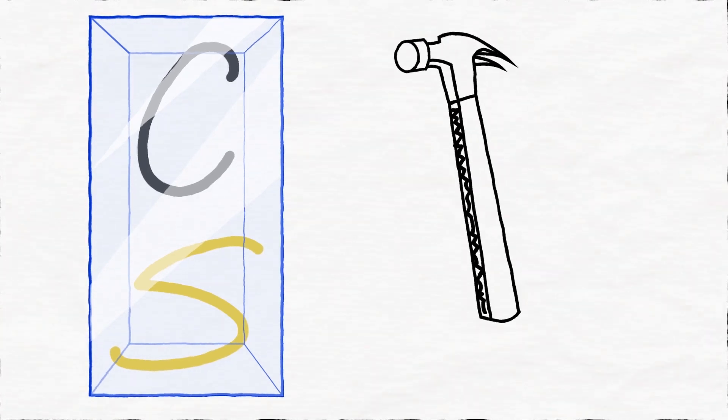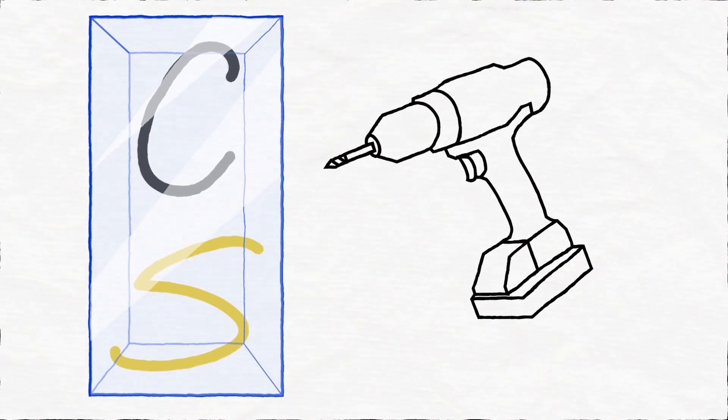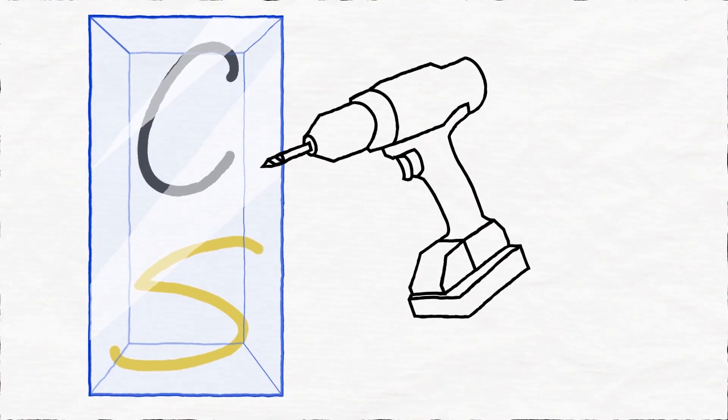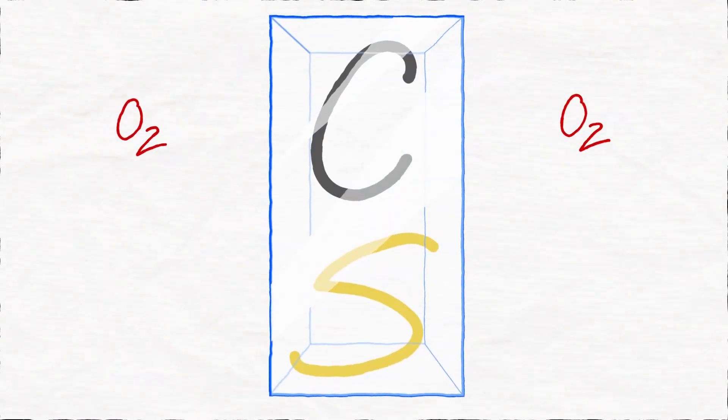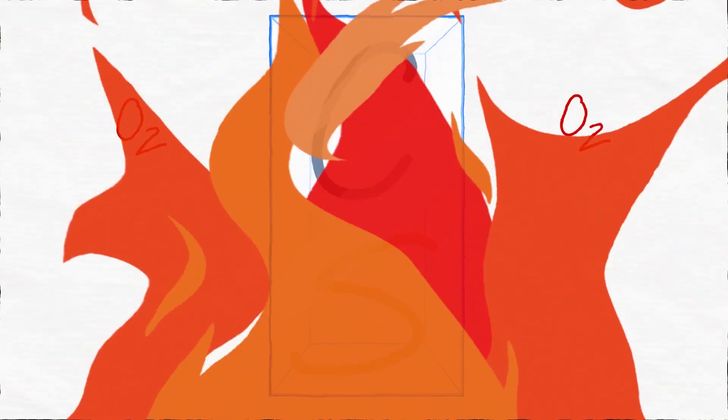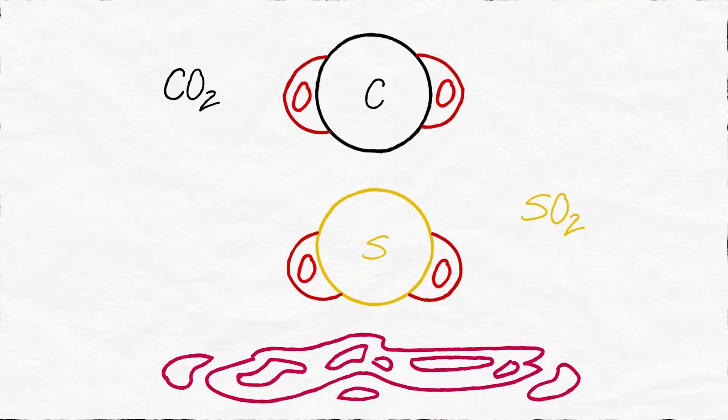But if the carbon and sulfur can be coaxed from their formidable fortresses, there may be a way to easily and accurately measure these elements. The answer? Heat. And lots of it. To the point of melting and combusting the material, forming stable combustion products.